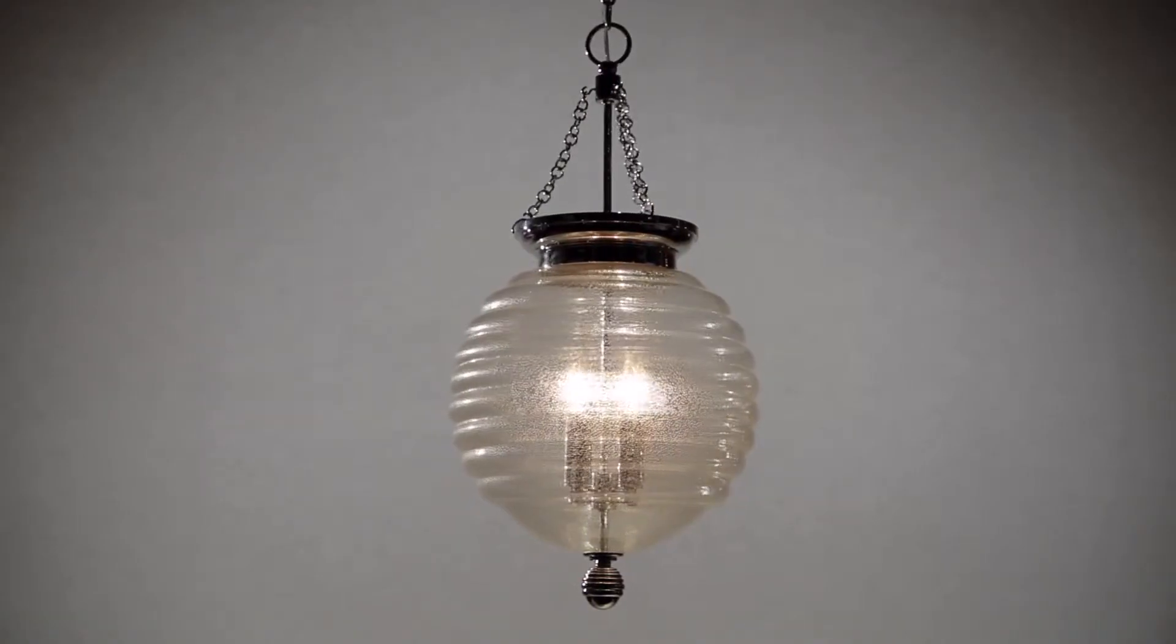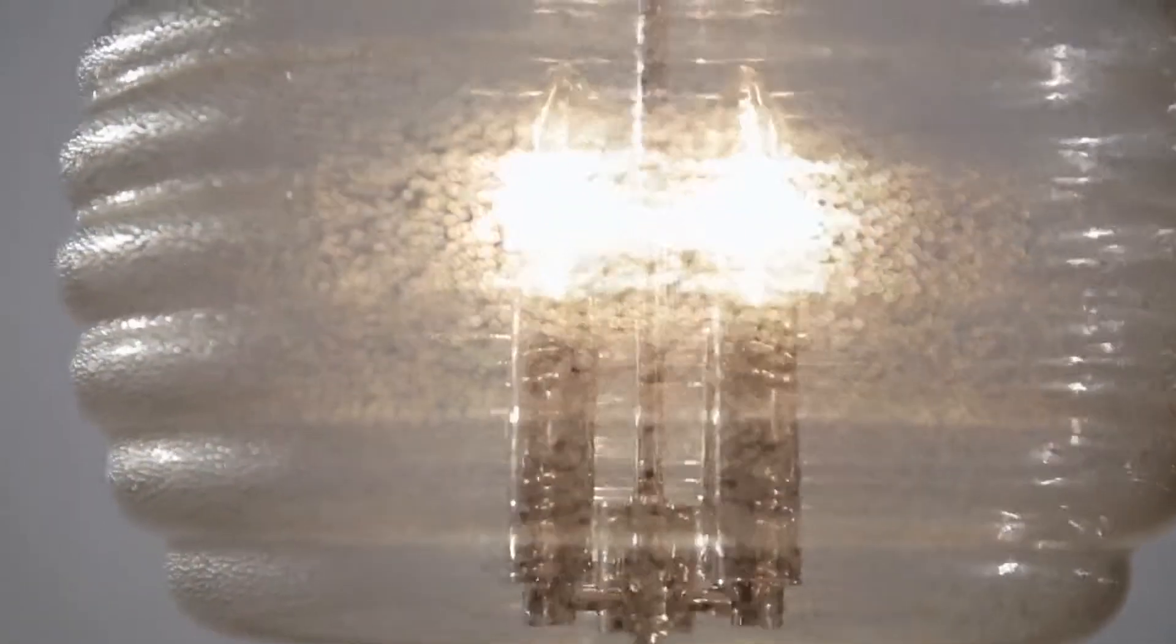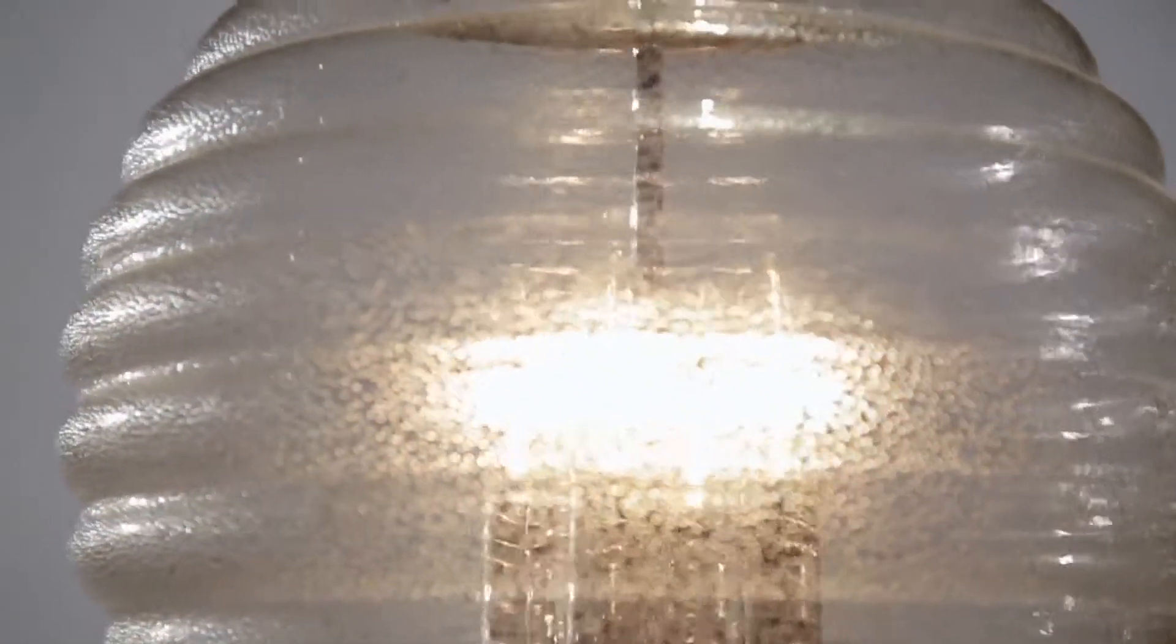Possessing a distinctive shape evoking a beehive, Coolidge is Hudson Valley Lighting's take on a late 18th century design with a modern twist.